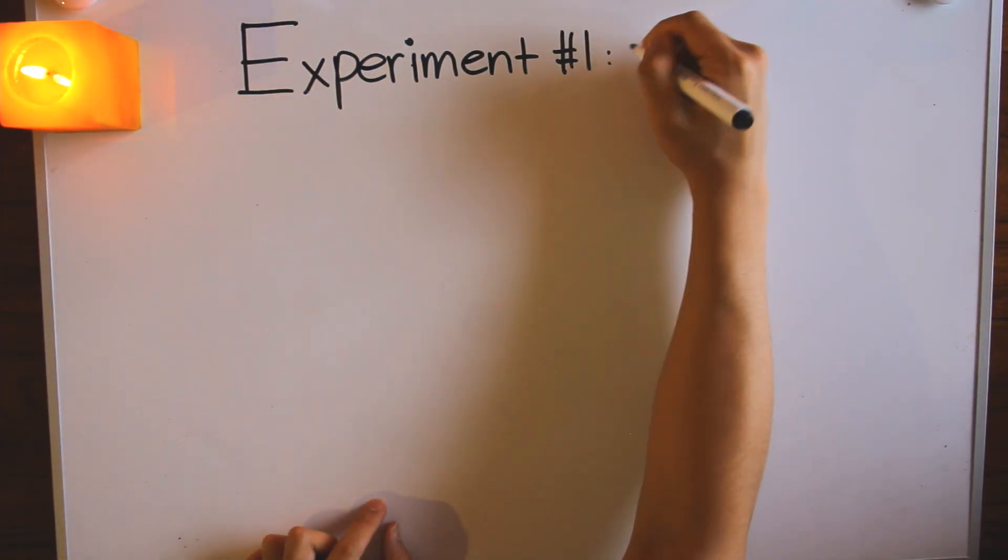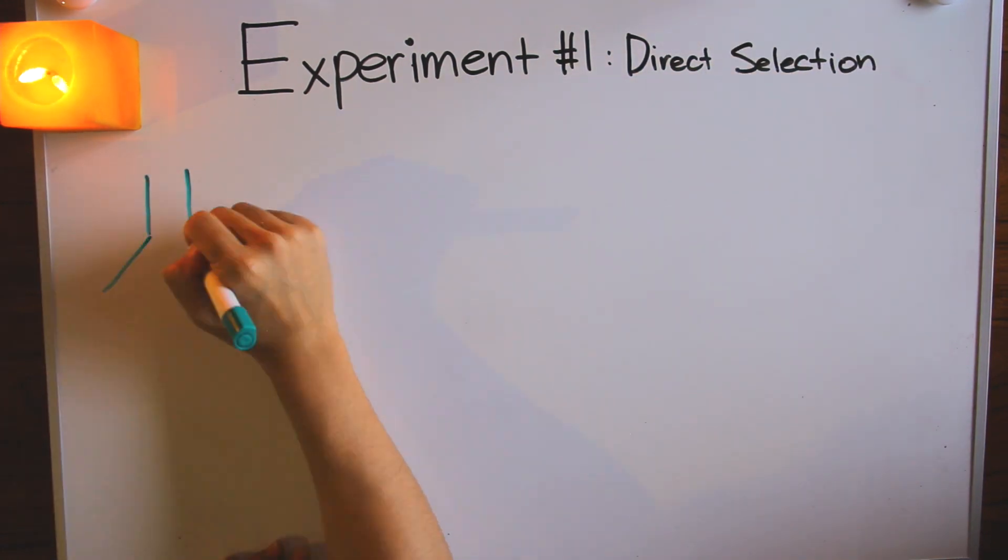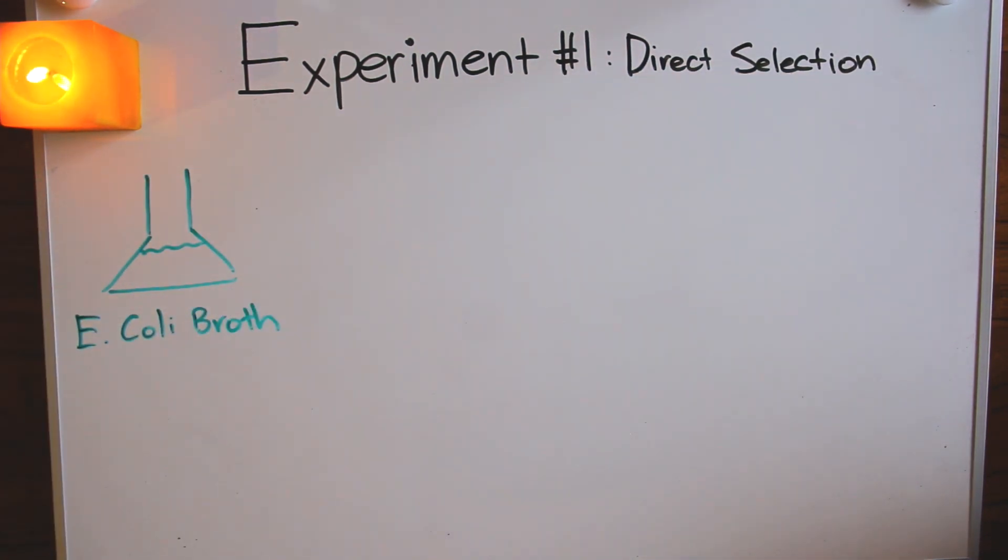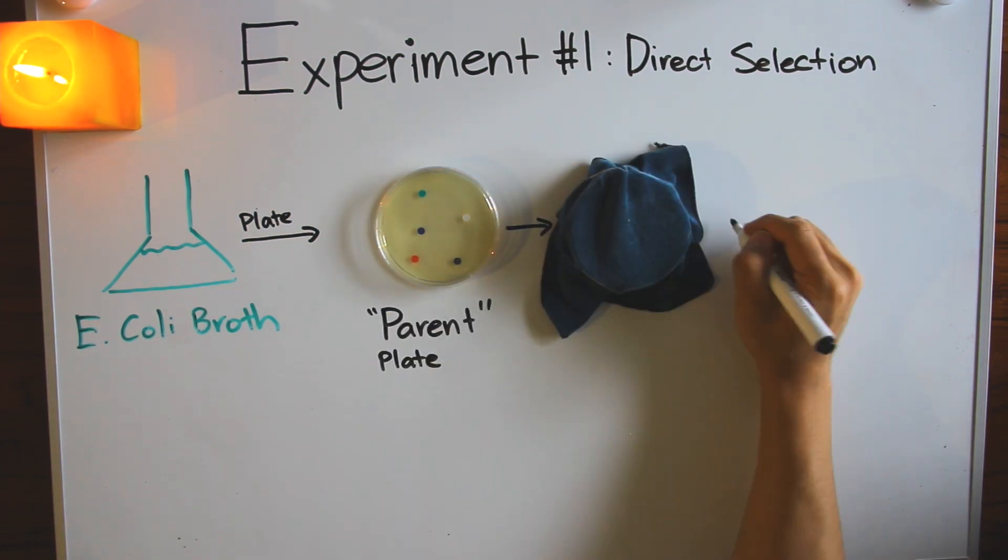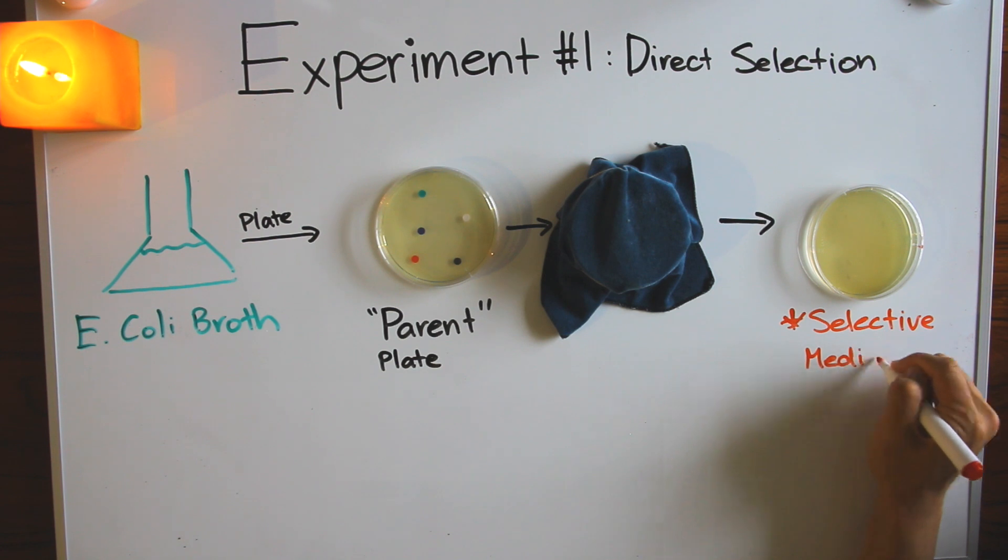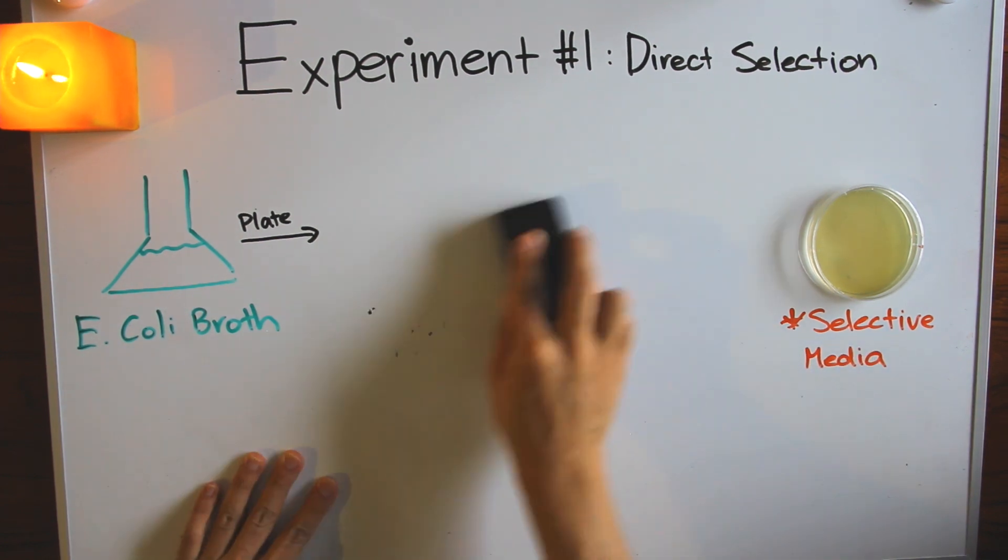In the first experiment, E. coli was directly exposed to an antibiotic and bacteriophage to select for mutants. First, different E. coli colonies were cultured in a broth and plated on a parent agar plate. Then, replica plating was used to copy this parent plate onto selective media.